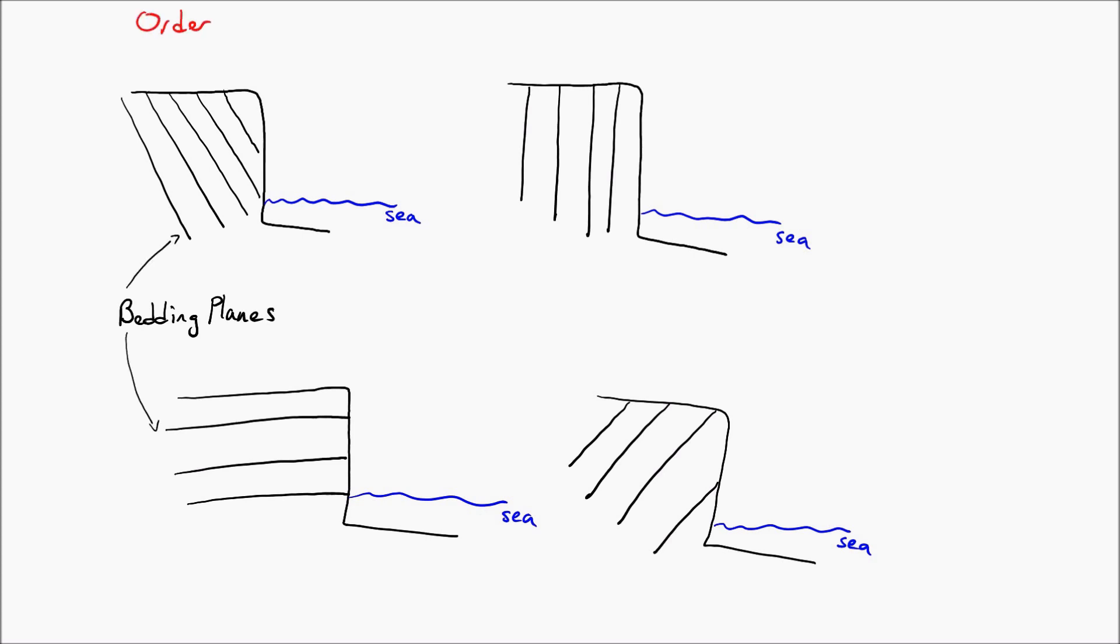Now we're also labeling them from order of fastest to slowest erosion. As you can see: one, two, three, and four.